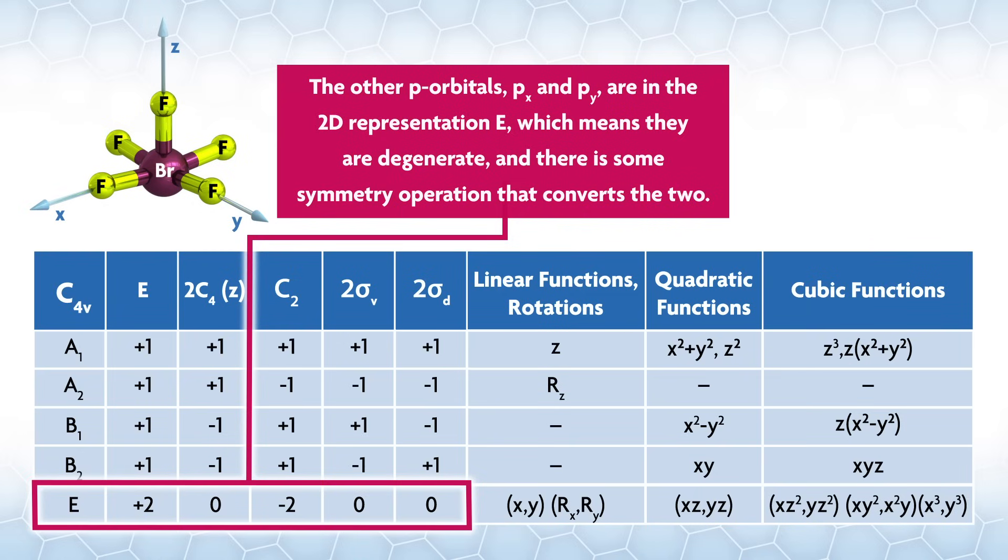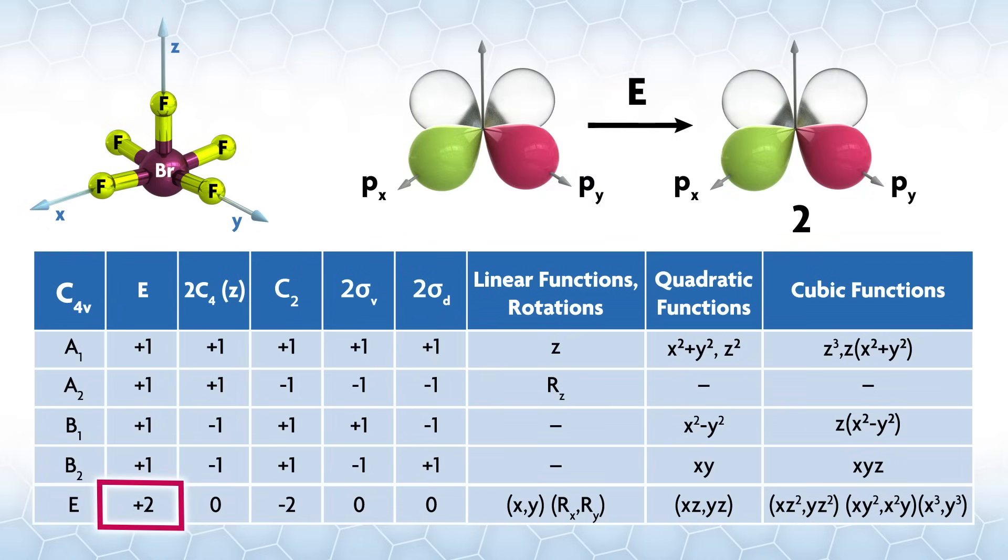The other p orbitals, px and py, are in the 2D representation E, which means they are degenerate, and there's some symmetry operation that converts the two. Let's draw these two orbitals in the xy plane and see what happens to them as we do the symmetry operations. The identity operation leaves them the same. Again, if no phase change occurs and the orbital doesn't move, we give it a plus one. We have two orbitals in the set and neither move, so plus one for each for a plus two under the E operation.